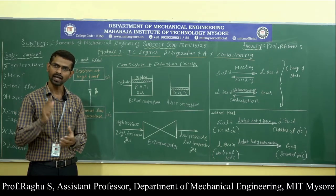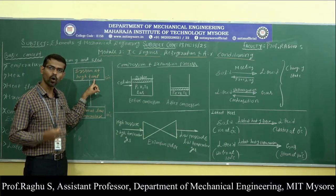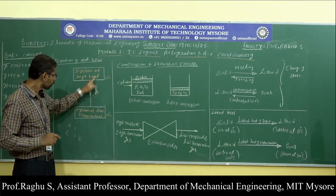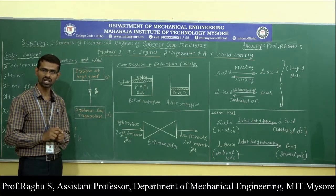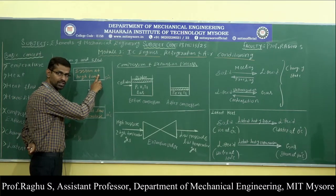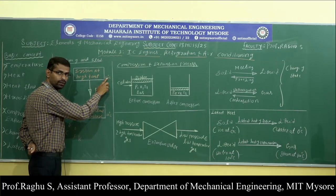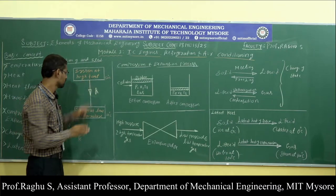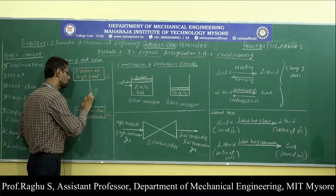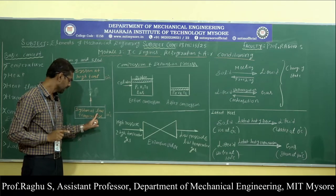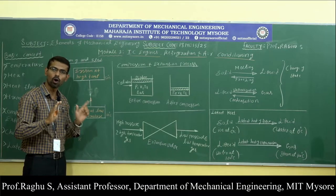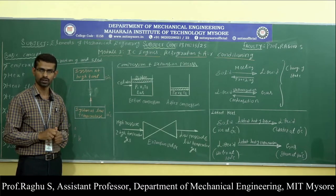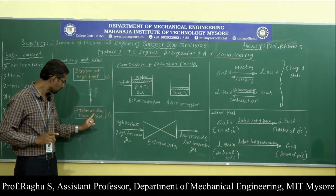What is the direction of heat flow? The direction of heat flow is always from a system at higher temperature to a system at lower temperature. This process occurs naturally without requirement of any external device. Heat flows naturally from the system at 50 degree centigrade to the lower temperature system. But the reverse process — pumping heat from a system at lower temperature to higher temperature — will not occur naturally. For this process, we need external assistance or external work.